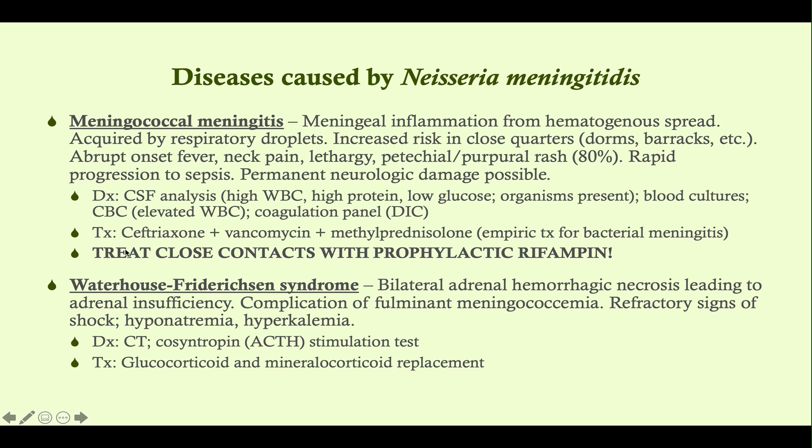Something that will come up on any of the steps: treat close contacts with prophylactic rifampin. If a patient is in college, treat their roommates. If they're in the military, treat anyone in their barracks. If they're in a household, treat everyone in that household. Remember how rifampin works for step one: it inhibits bacterial DNA-dependent RNA polymerase — the enzyme that creates an RNA template from DNA for transcription.